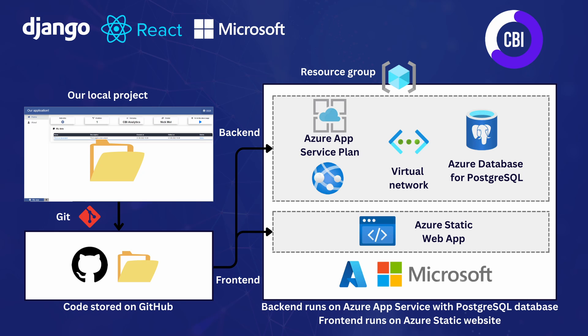For our backend we're going to be using Azure's App Services to deploy our Django code, and we're going to use the option where we can create a web plus database in one go. That means Microsoft is going to create an Azure App Service server for us to make sure our backend code runs, and it is also simultaneously going to create an Azure Database for PostgreSQL. By using the web plus database option on the Azure portal, it's going to already configure some things that we would normally have to do ourselves, which is quite beneficial.